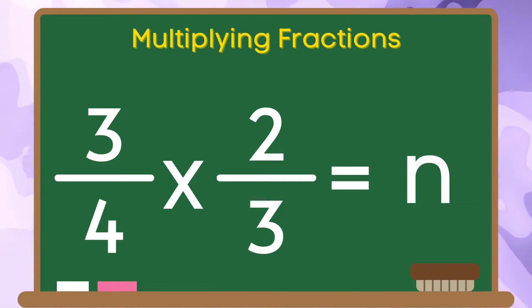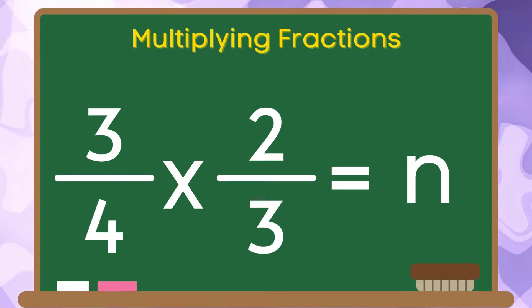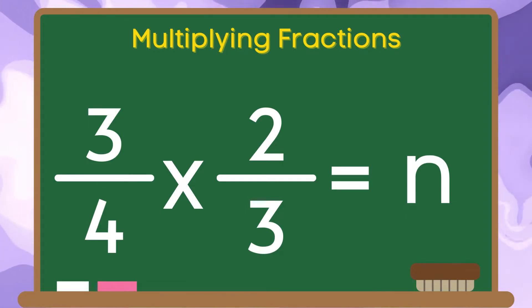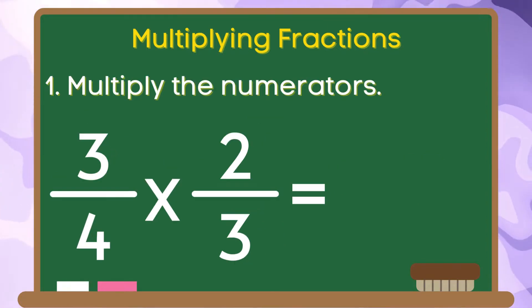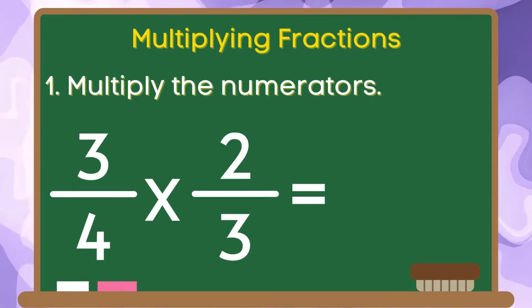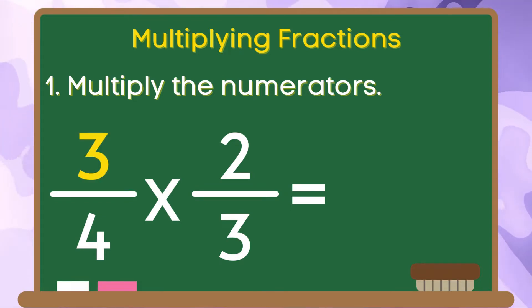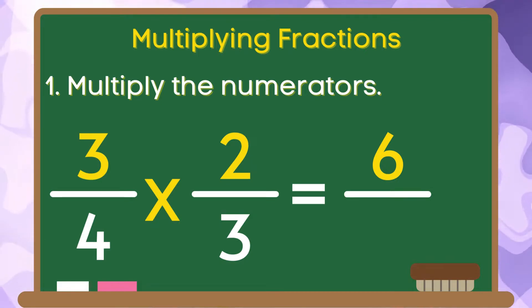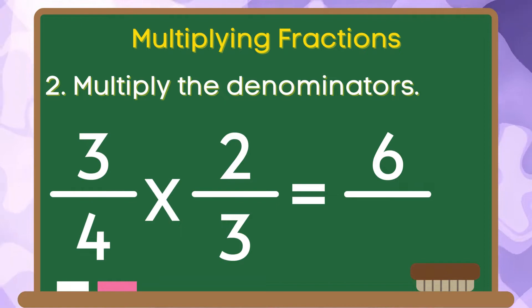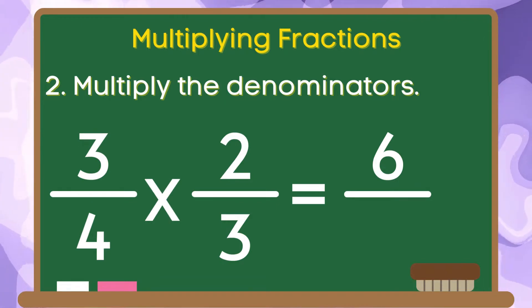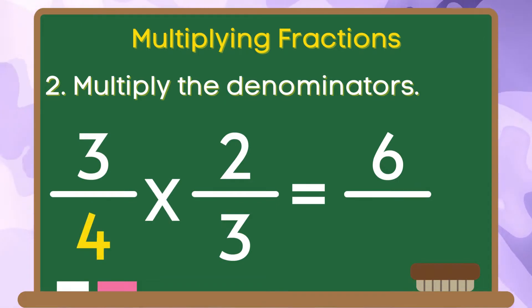Let us have an example. 3 fourths multiplied by 2 thirds is equal to n. Let us do step 1, multiply the numerators. We are going to multiply 3 by 2 and the product is 6. Now let us do the second step which is multiply the denominators. 4 times 3 is equal to 12.